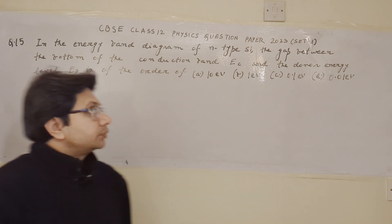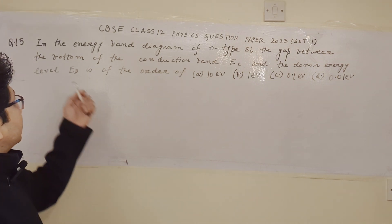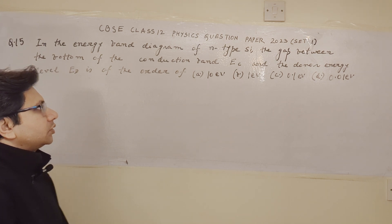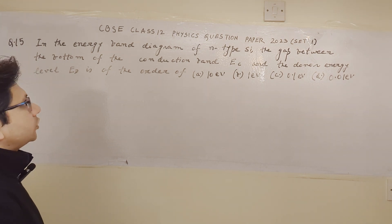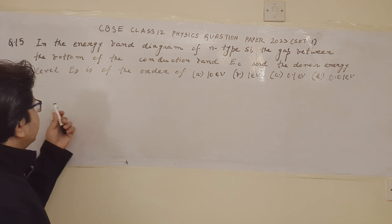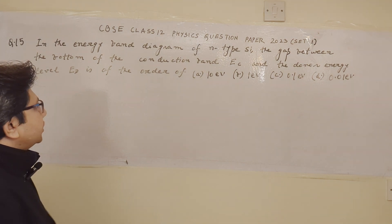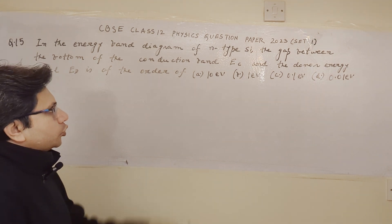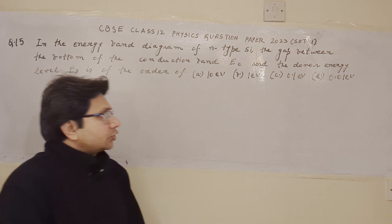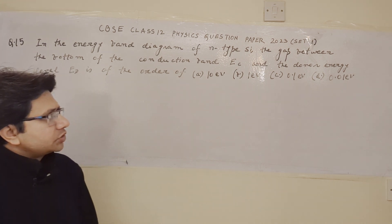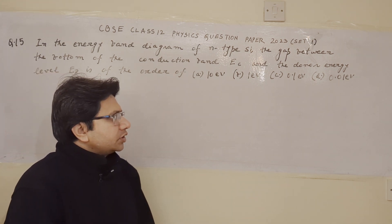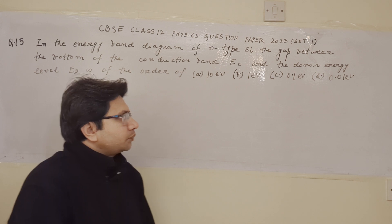Hello students, the question is: in the energy band diagram of n-type silicon, the gap between the bottom of the conduction band EC and donor energy level ED is of the order of — option A: 10 electron volt, option B: 1 electron volt, option C: 0.1 electron volt, and option D: 0.01 electron volt.